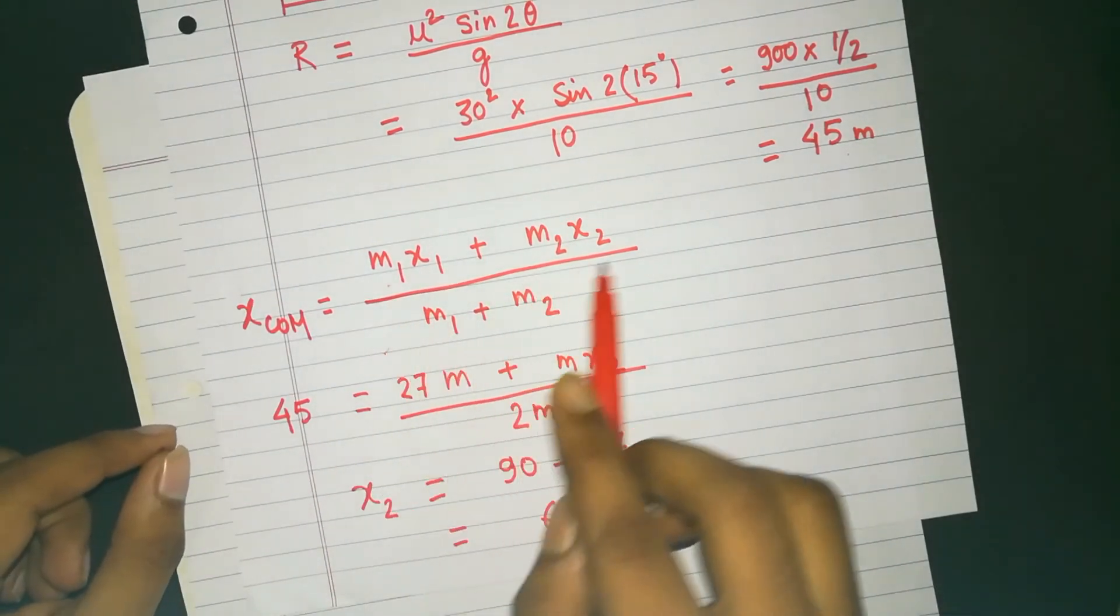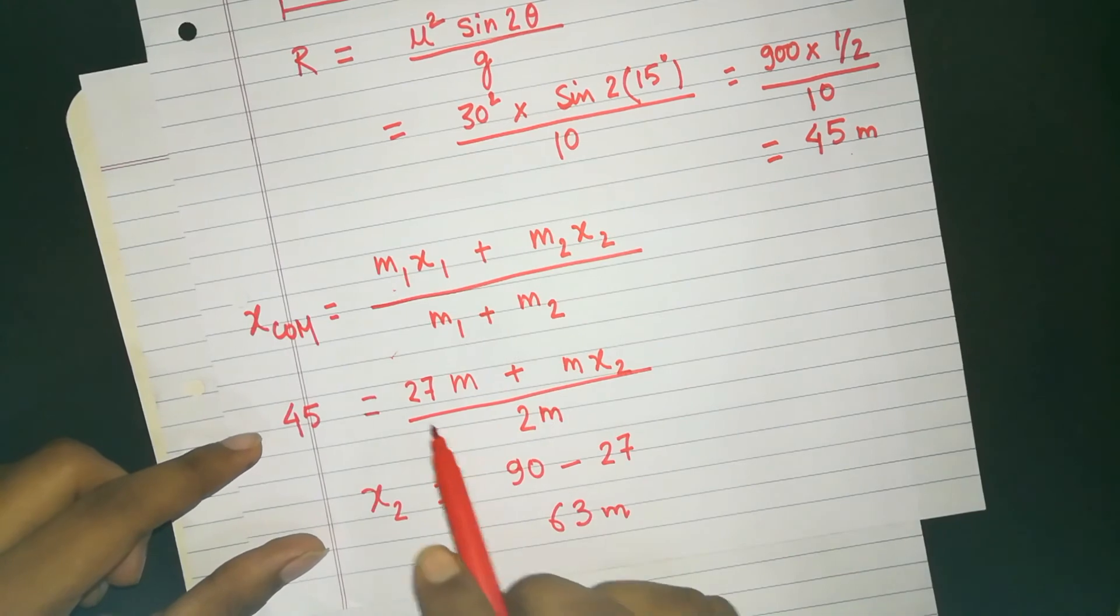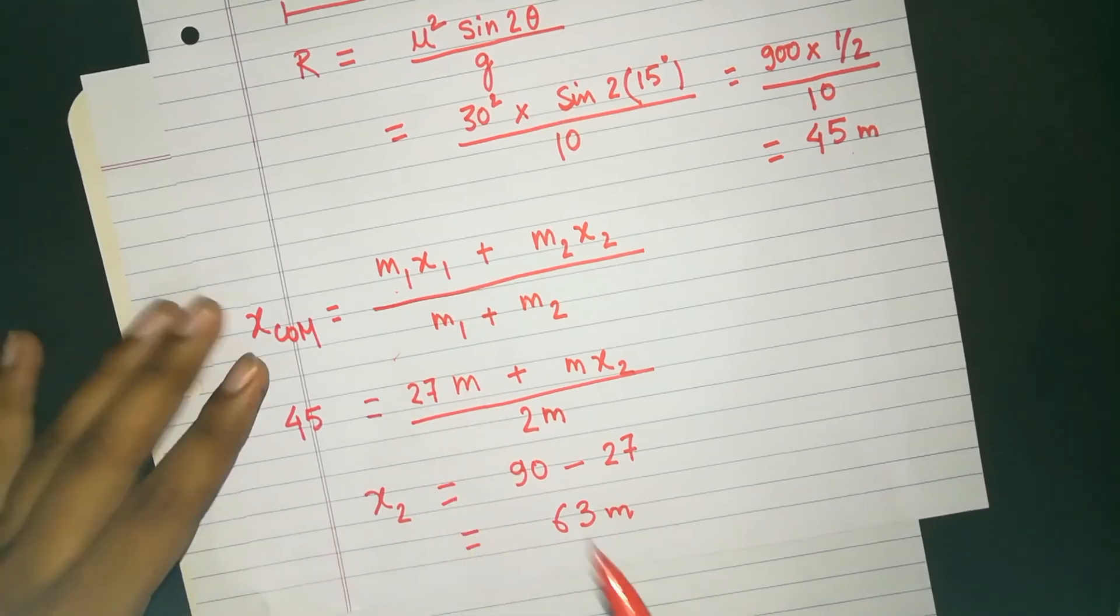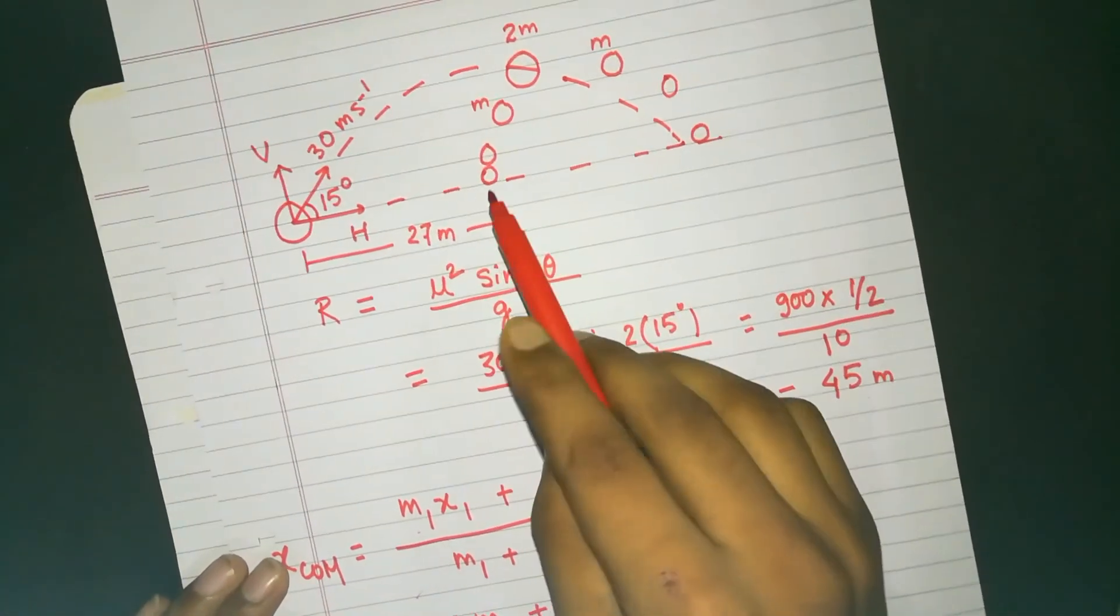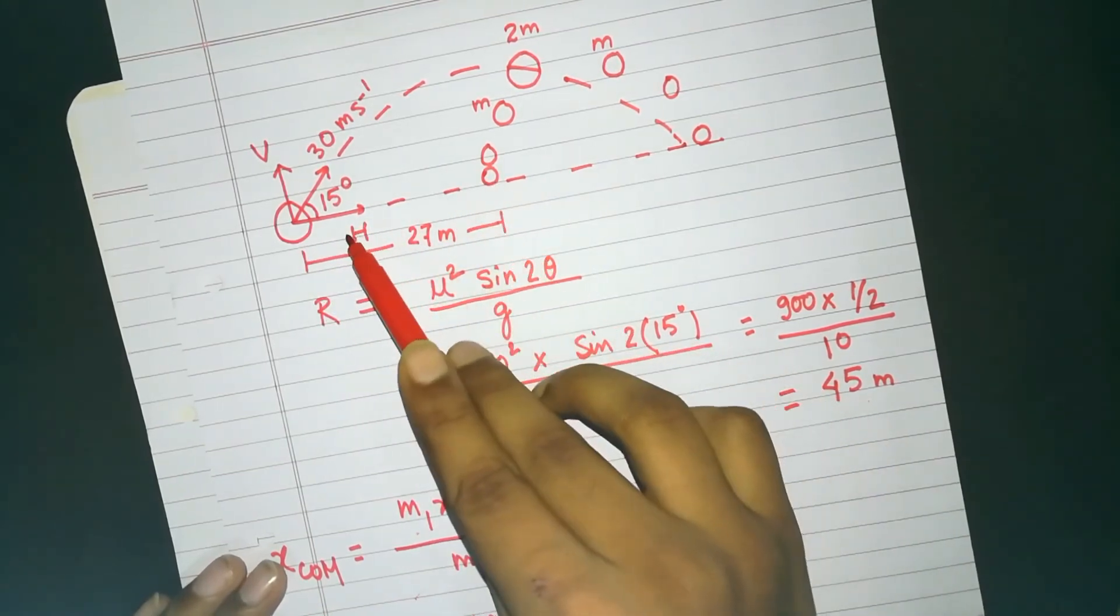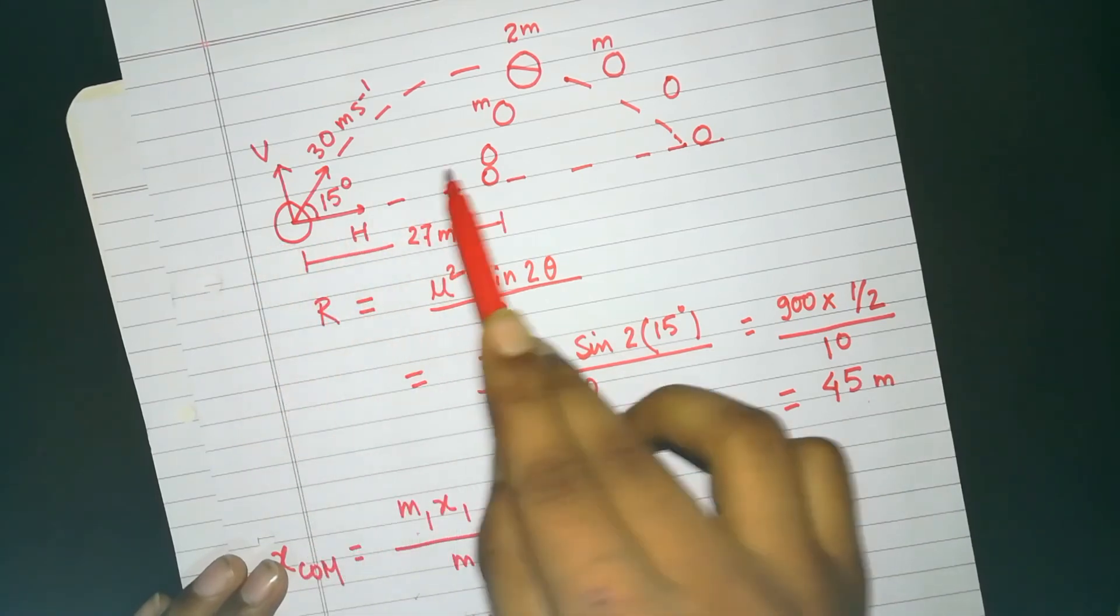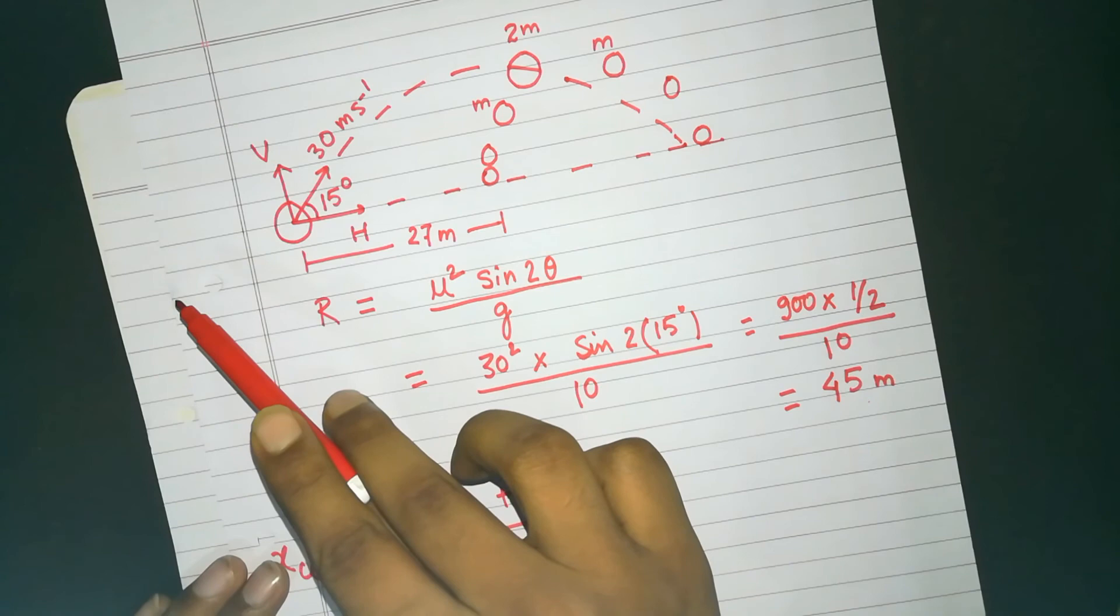That is, let's again see the formula for center of mass. That is x_COM equal to M1 X1 plus M2 X2 divided by M1 plus M2. Here we have taken 27 as positive. While in the question, it is just given as a distance that this particle is 27 meters far from the starting point. It's not given that it's in the right direction or in the left direction. It could have been in the left direction as well.